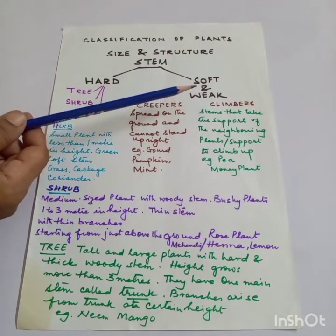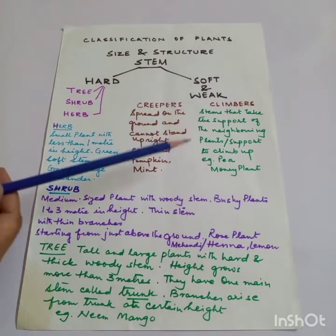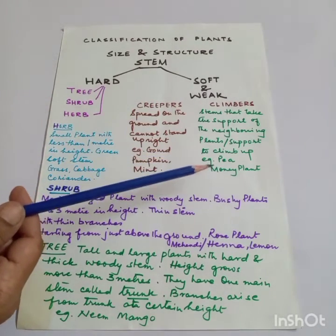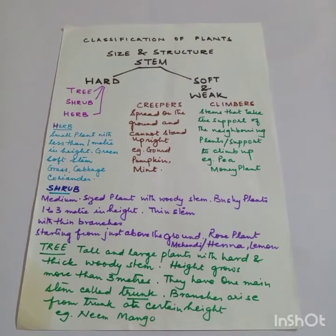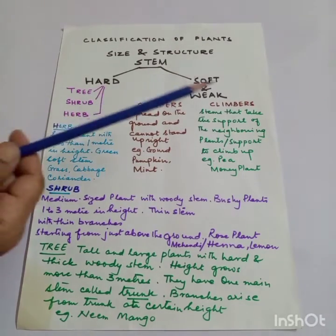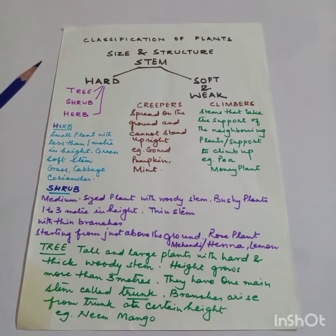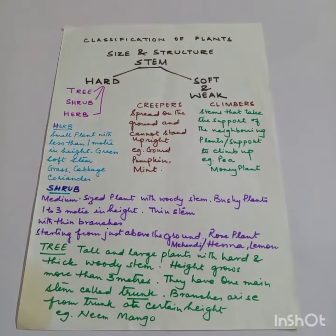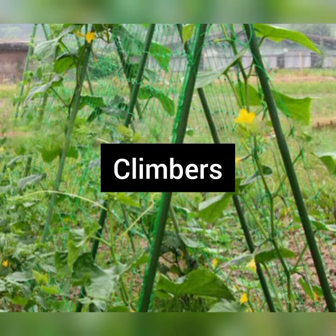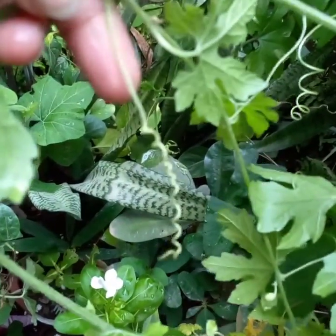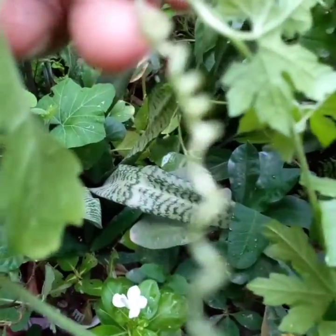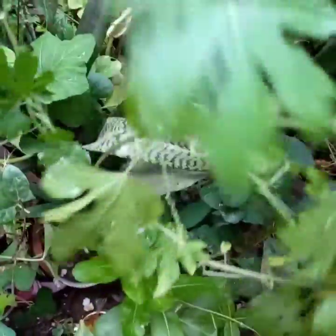Climbers are thinner plants, and they have their own modified stipules or leaves that turn into tendrils. The stems take the support of neighboring plants and structures to climb up. For example: pea and money plant. You can see the modified leaves — these are called tendrils.